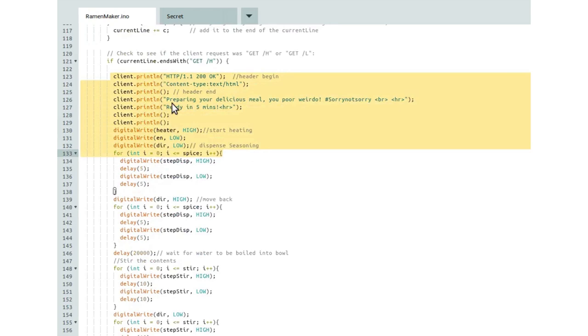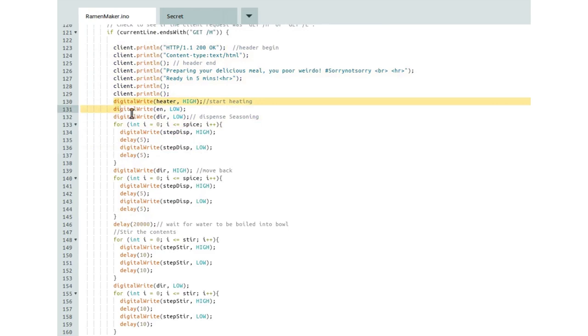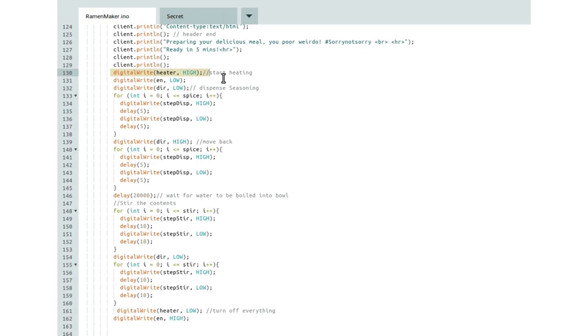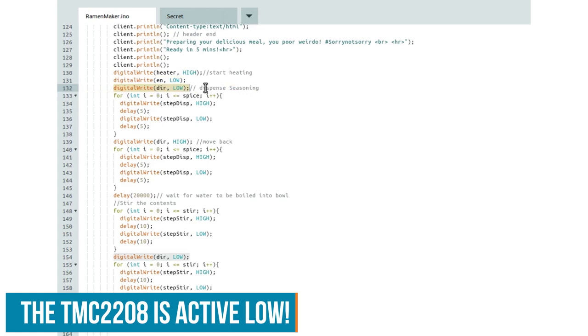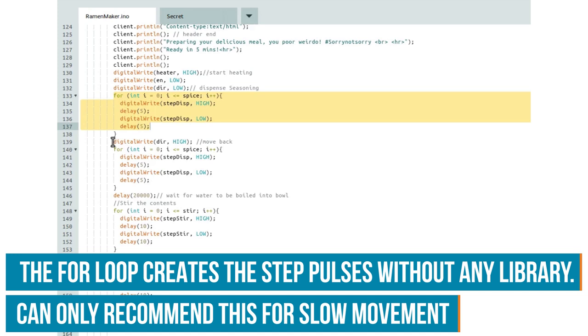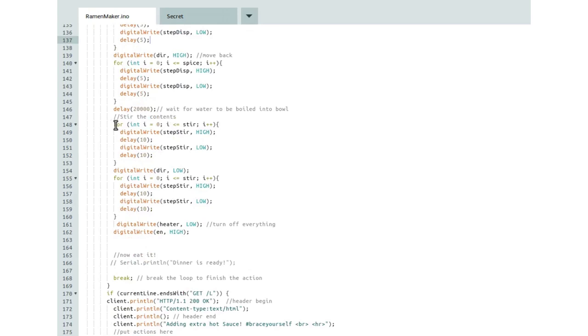So then we have to make another HTML page that gets displayed when we have pushed the first button. And this is the procedure the machine does when it's preparing the soup. So we turn on the heater and the water will start to fill the bowl. We enable the stepper motors. We put the direction in the direction that is needed to dispense the seasoning. This loop creates the steps needed to drive the seasoning. And this does the same thing in the opposite way. So it goes back to its original position.